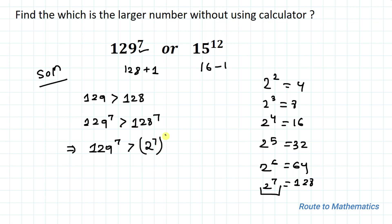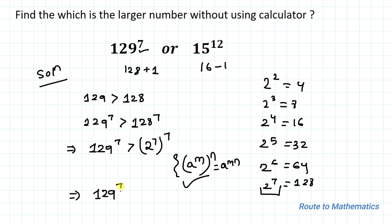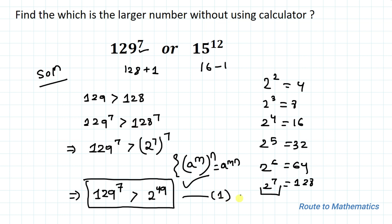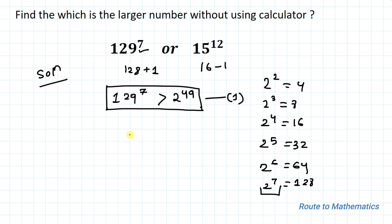We know the exponential rule that a^m whole to the power n equals a^(mn). Applying this rule, we multiply the exponents: 129^7 is greater than 2^49. Let's take this as Inequality 1.